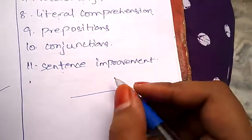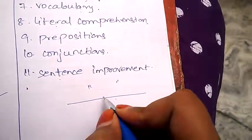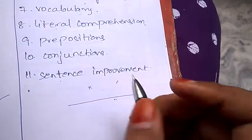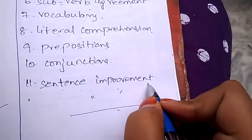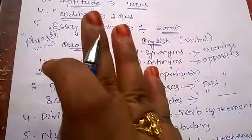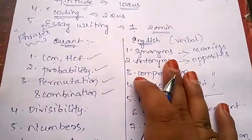Under sentence improvement, they'll be giving you a sentence and you need to correct those sentences and improve the sentence using the correct article or something like that. This is the syllabus for Wipro under quantitative aptitude and English.